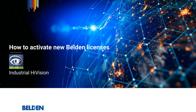Industrial HiVision version 8.6 introduces a new licensing option offering a faster process for users to get and activate licenses. In this video, we will explain how to activate this new licensing option, called Belden licenses.